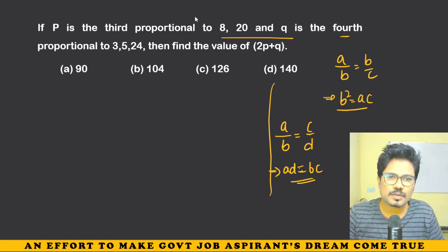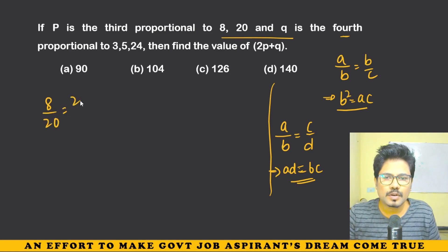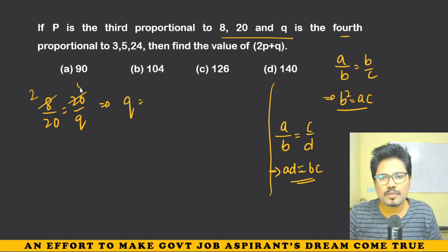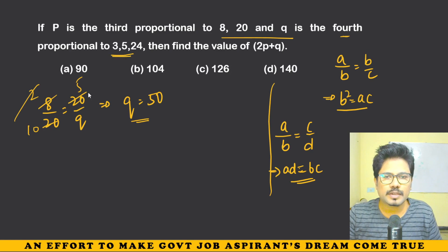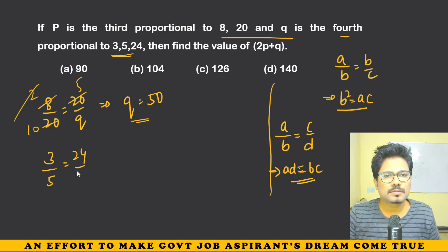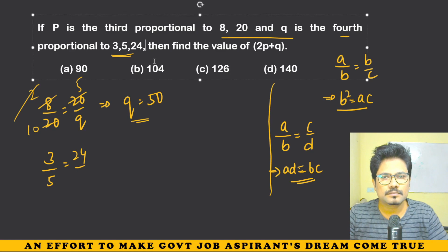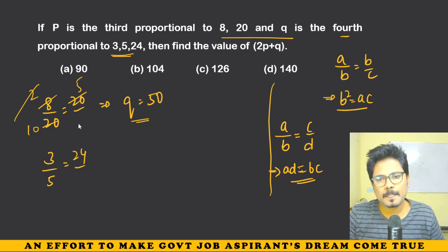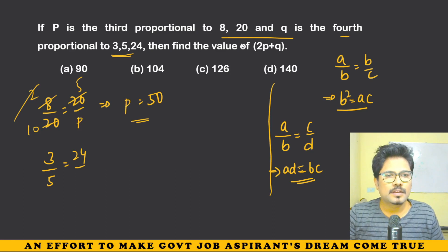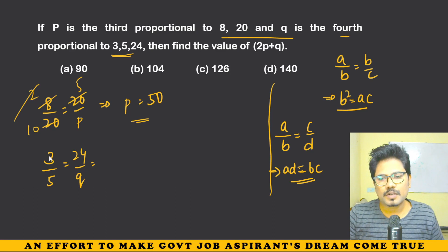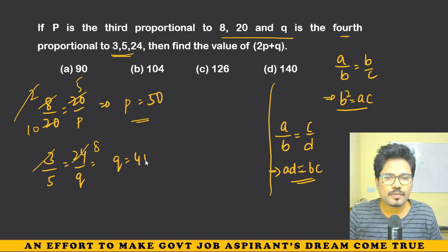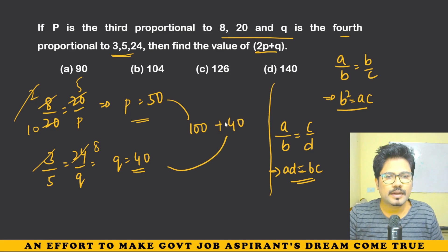So the third proportion: 8:20 = 20:Q. That means Q = (20 × 20) / 8 = 400/8 = 50. Q equals 50. For the fourth proportion: 3:5 = 24:P. P equals (5 × 24)/3 = 40. So Q = 40 as the fourth proportional. Therefore 2P + Q = 2(50) + 40 = 140. The answer is 140.